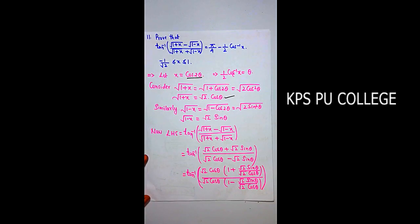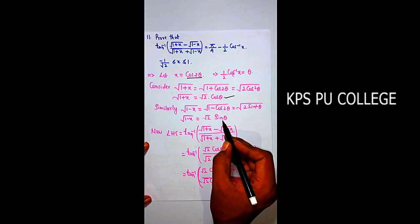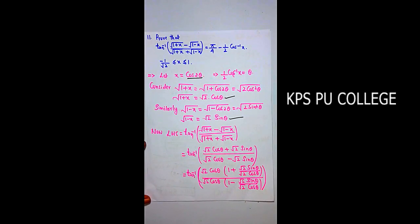Similarly, √(1-x) = √(1-cos2θ) = √(2sin²θ) = √2·sinθ. Now consider the LHS: tan⁻¹[(√(1+x) - √(1-x)) / (√(1+x) + √(1-x))], substituting √(1+x) = √2·cosθ and √(1-x) = √2·sinθ.